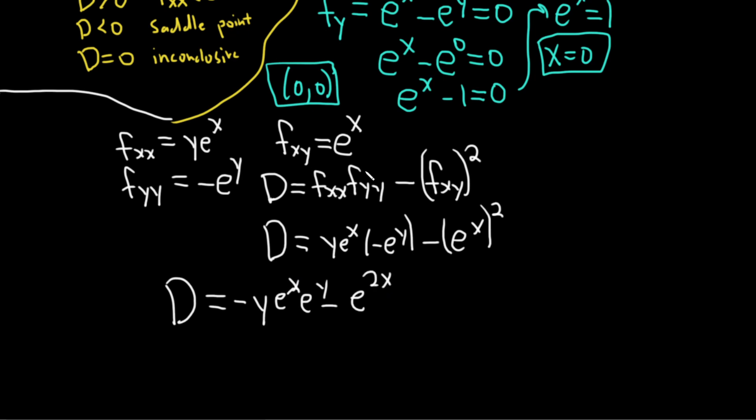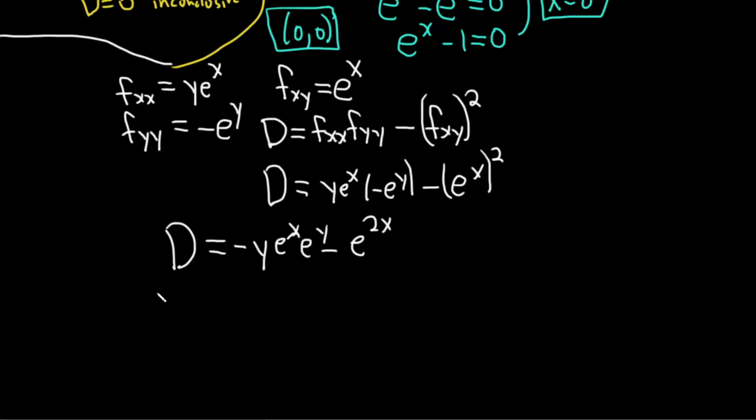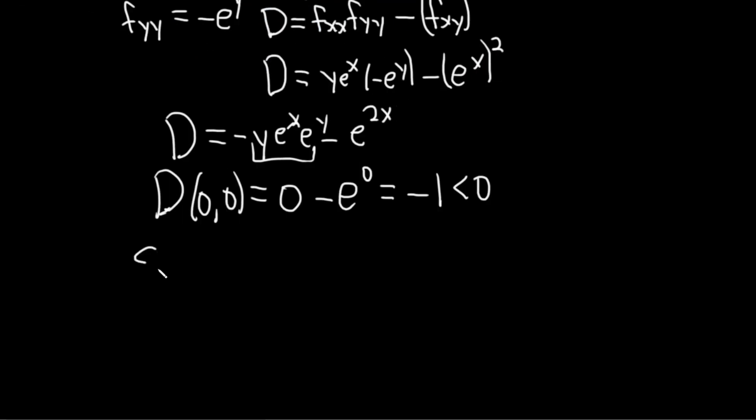Now we need to evaluate it at (0,0) to see what happens. Big D evaluated at (0,0), well the whole thing here is going to be 0 because y is 0. So this is 0 minus e^0. e^0 is 1, so we get negative 1, which is less than 0. This means we have a saddle point at (0,0).